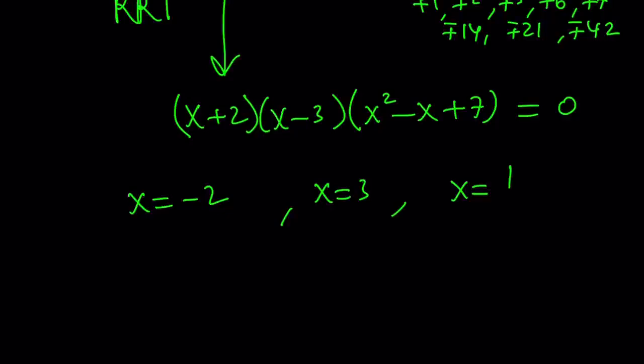That's going to be 1 plus minus the square root of b squared minus 4ac. That is going to be negative 27 divided by 2.